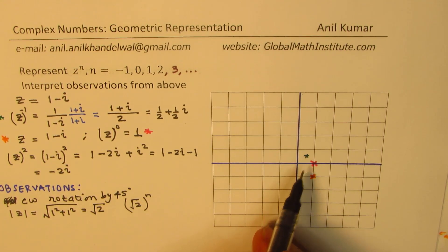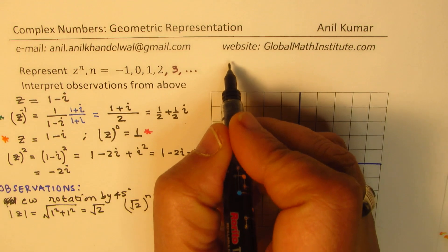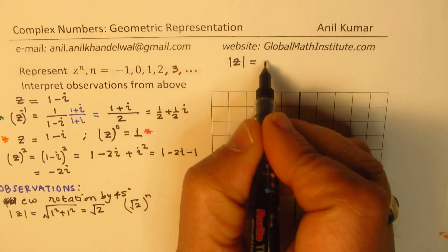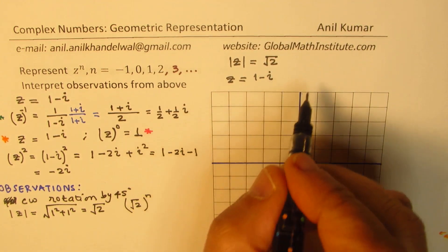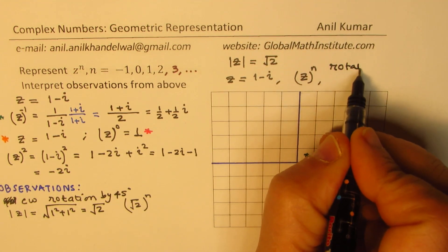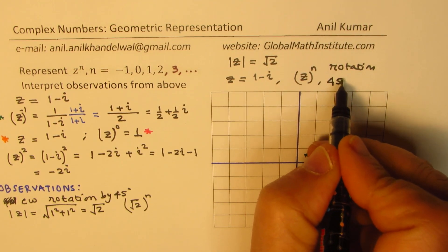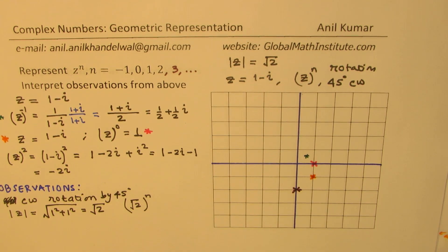So if you have the complex number z whose magnitude is square root 2, and z equals 1 minus i, then for the powers of n we have a rotation by 45 degrees clockwise. And each time, the distance from the origin will be square root 2 times the previous number. So that is the kind of observation you will see when representing z to the power of n.